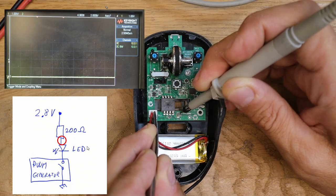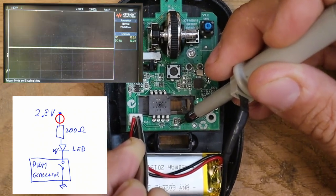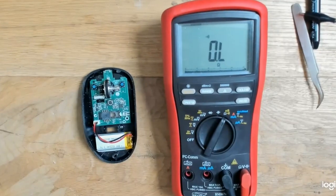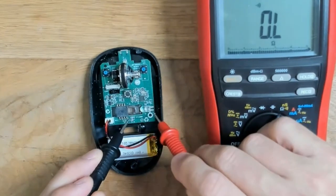If you don't have an oscilloscope, simply look for a resistor directly attached to the LED pad.